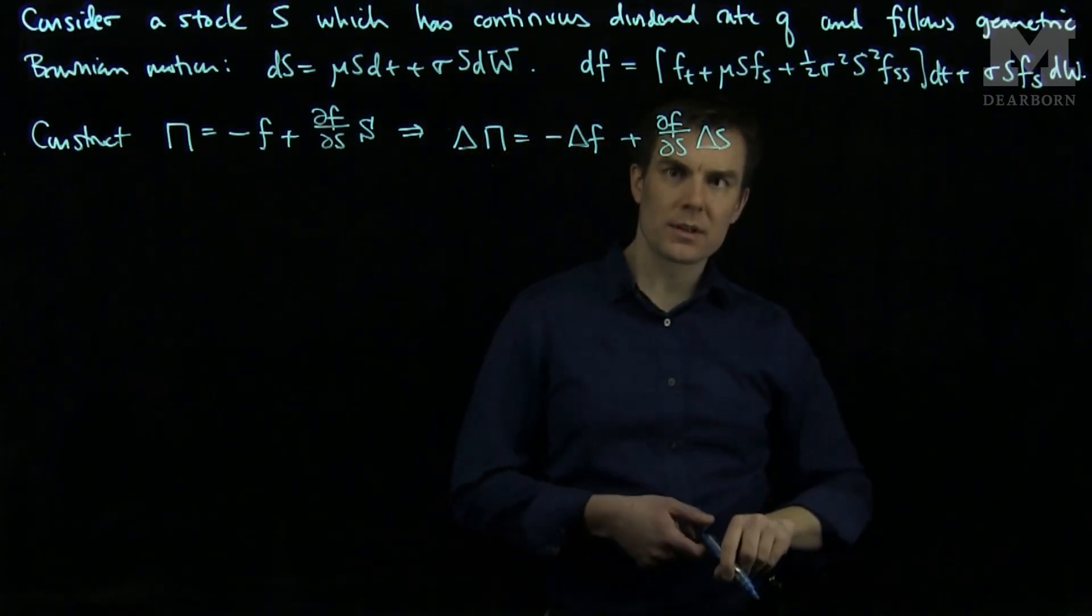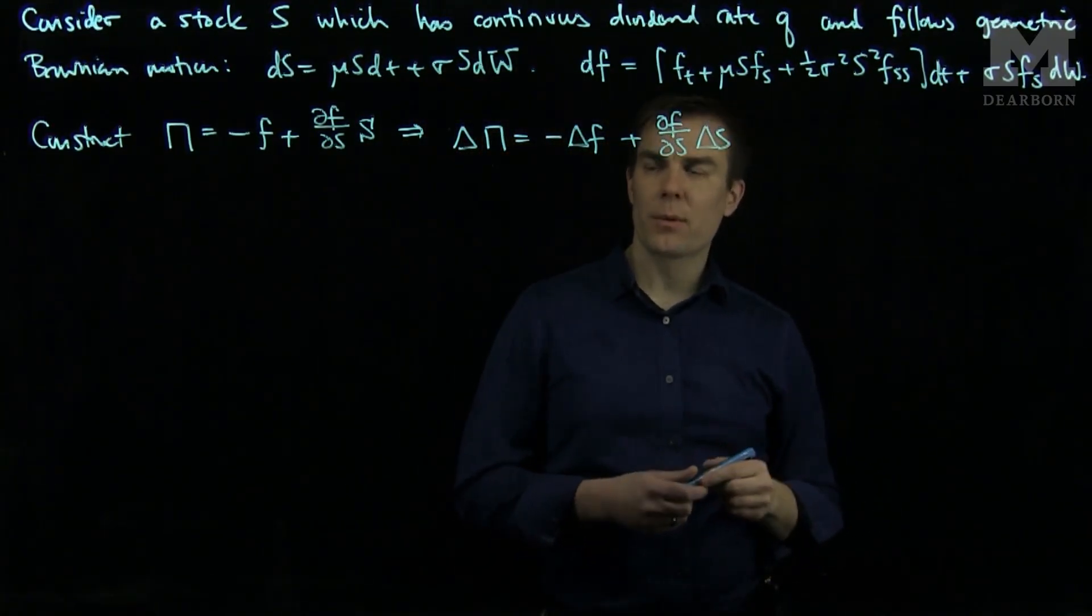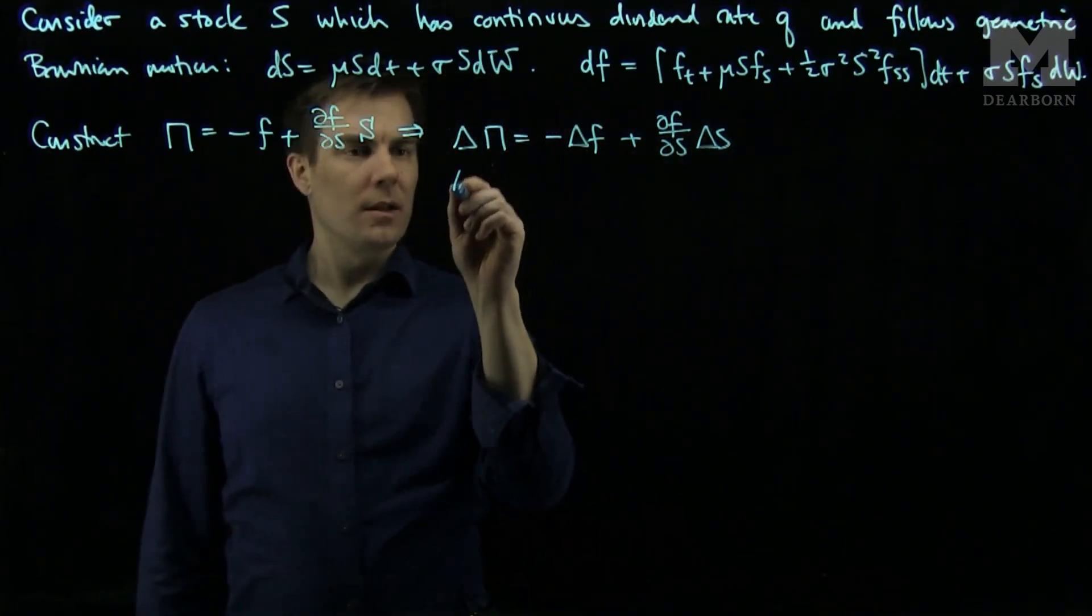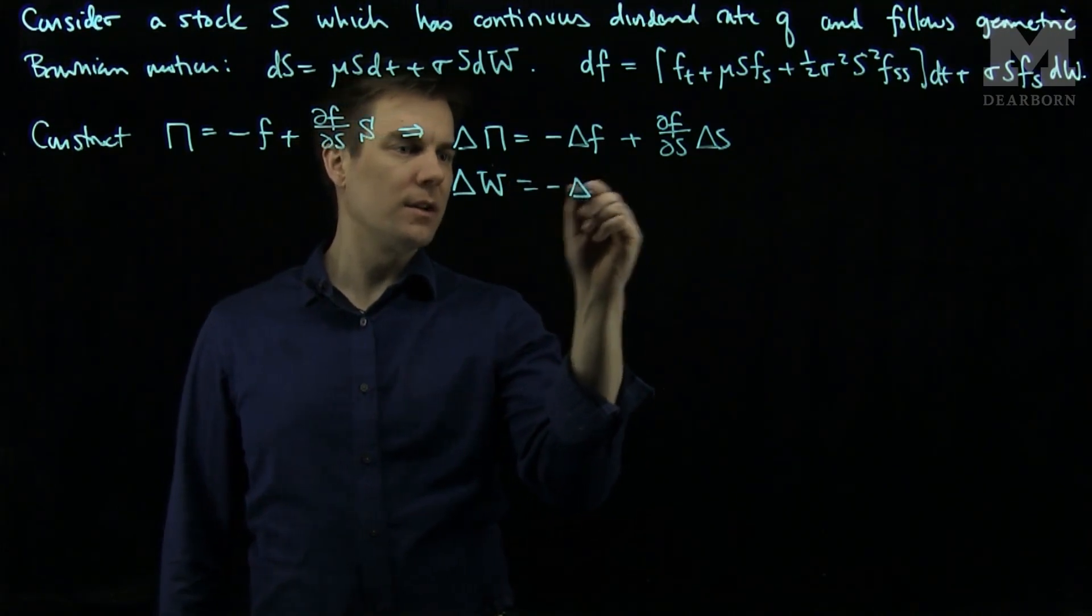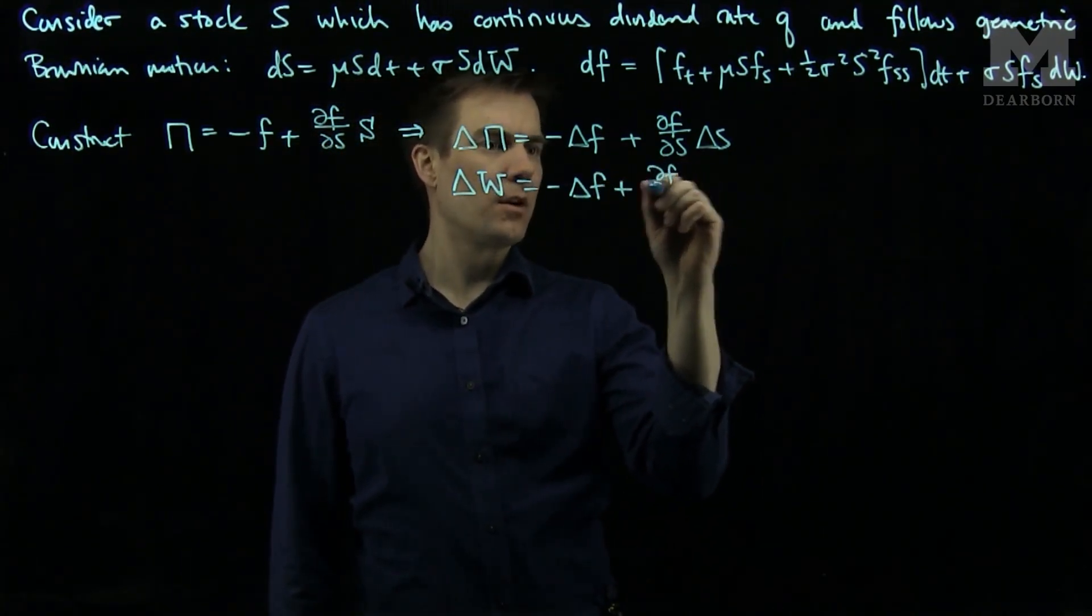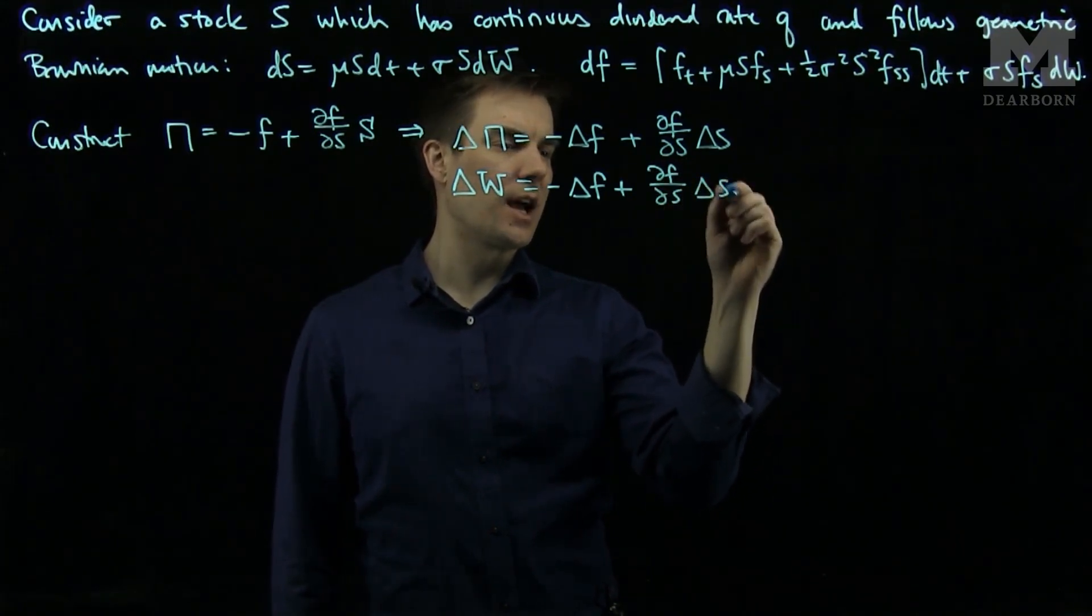But now the difference is that while the portfolio changes this way, our wealth will change in the following way. The change will be negative delta F plus partial F partial S delta S.